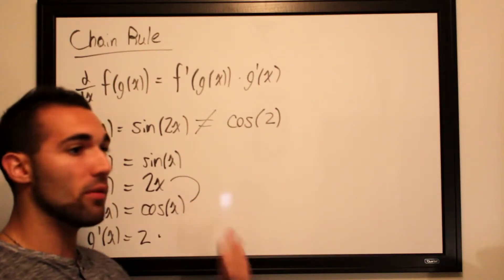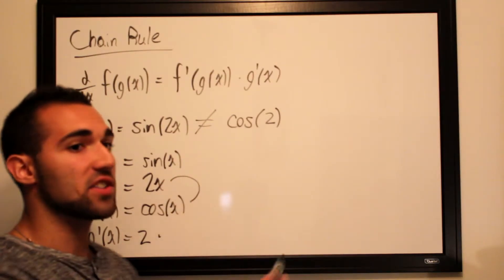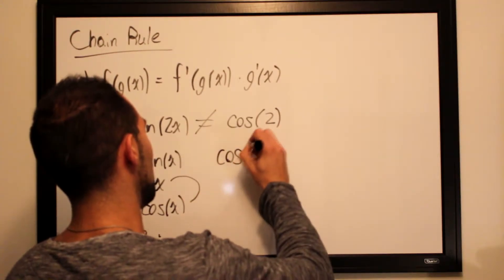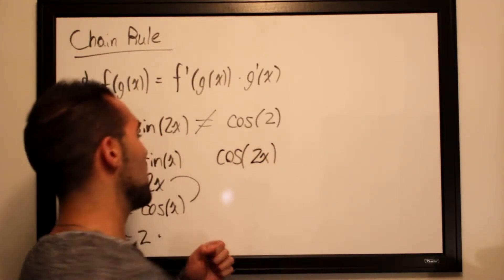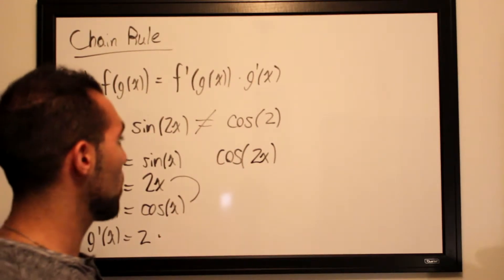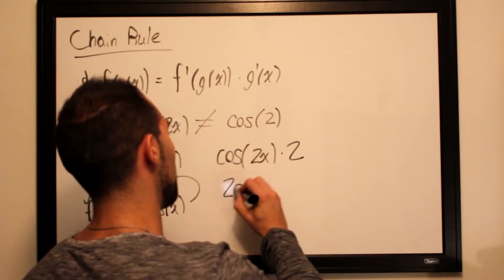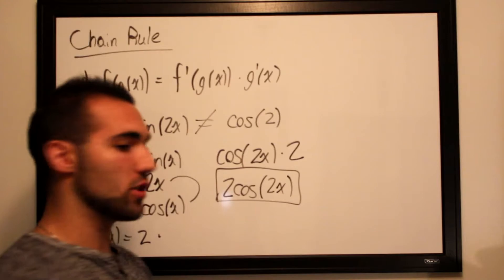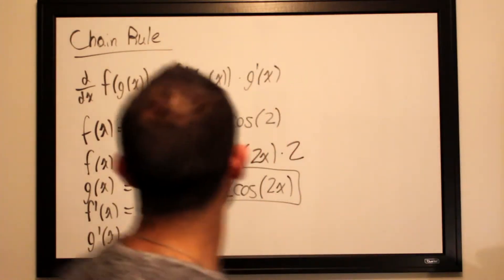To compose f'(x) with g(x), we put g(x) wherever we see x in our f'. Here f'(x) is cosine, and we substitute in g(x) = 2x, giving cosine of 2x. Then we multiply by g'(x) = 2. Simplifying, our final answer is 2·cosine(2x). That is the derivative of sine of 2x using the chain rule.